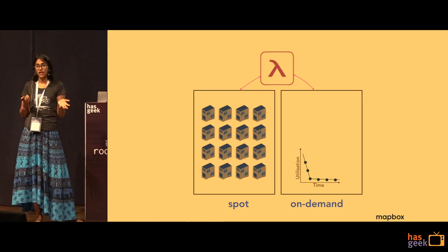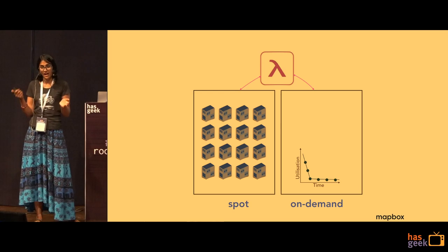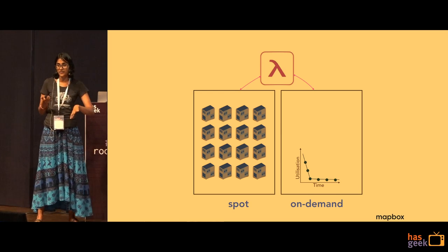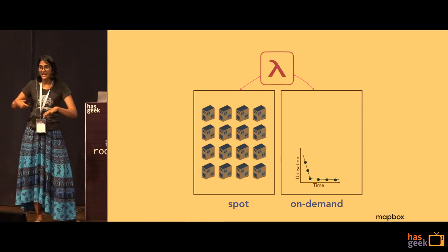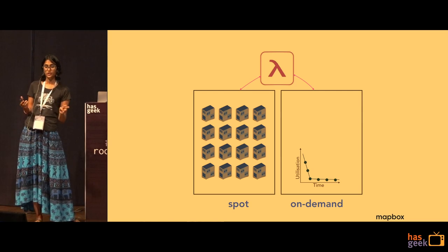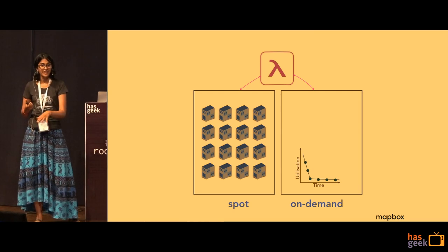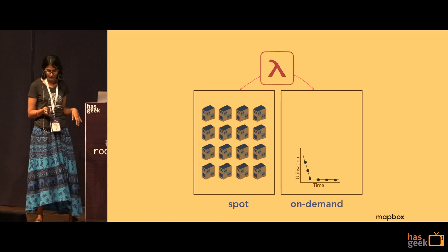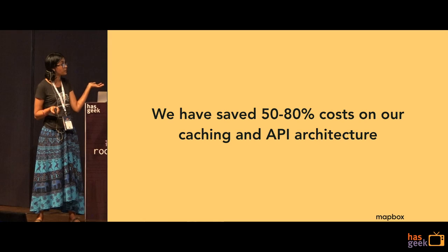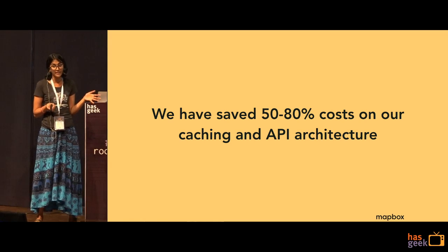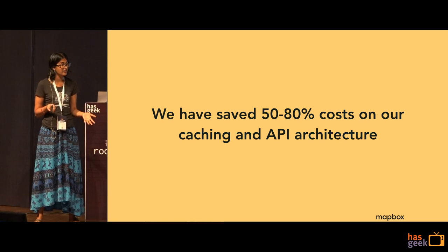We have seen this take minutes and sometimes even hours for the spot market to stabilize, but even those brief periods where we run entirely on on-demand instances to weather the storm haven't really cut into our savings. Our savings have actually been up to 50 to 80 percent of costs on our API architecture and even on our caching architecture, which we have also migrated to SpotSwap.